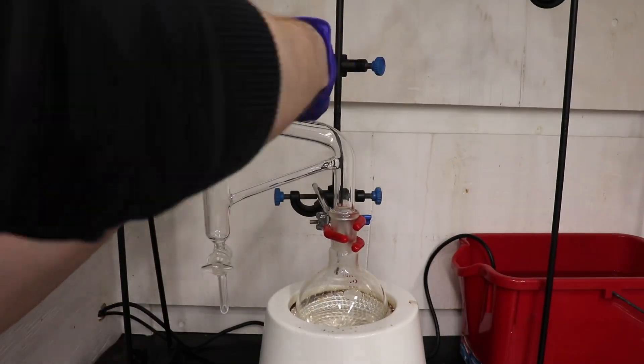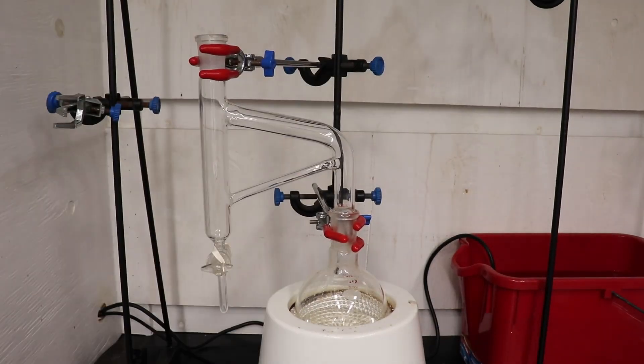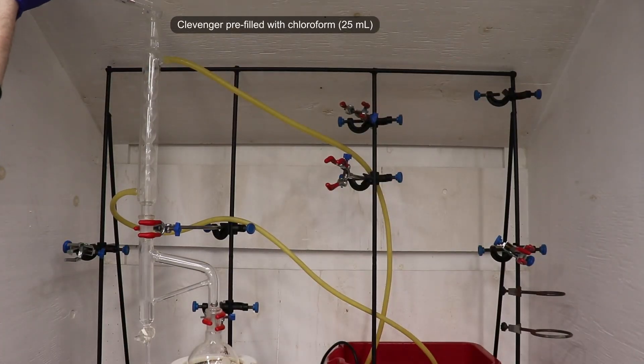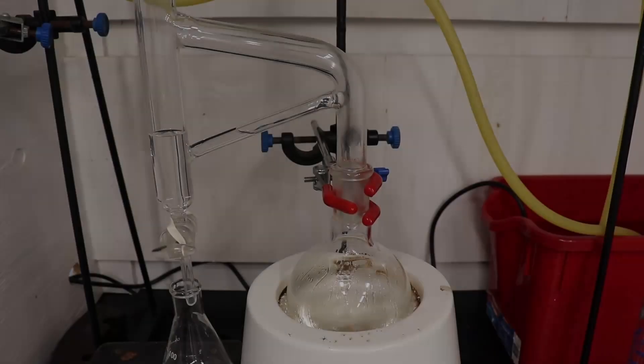I then set up for reflux with a Dean-Stark apparatus, and charged the Dean-Stark with 25 mL of chloroform. I then ran water through the condenser and started heating.